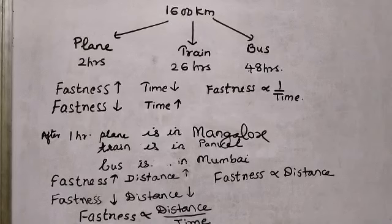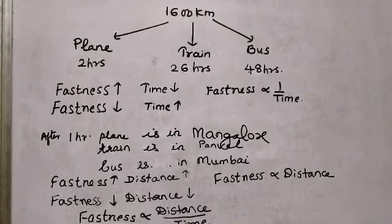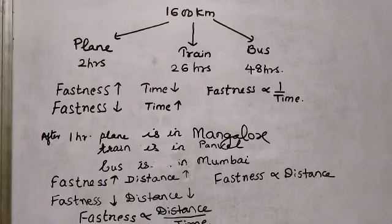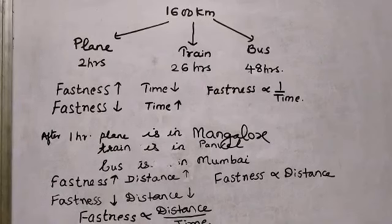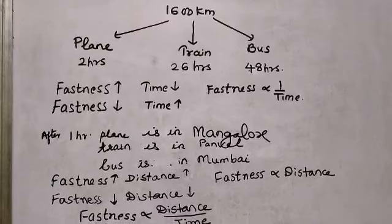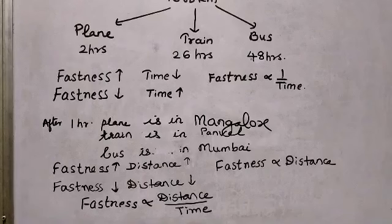If the family thinks of traveling by plane, the plane takes two hours to reach Kerala from Mumbai. The train takes 26 hours, whereas the bus takes 48 hours to reach Kerala. So for the same distance of 1600 kilometers, you can compare the time taken.